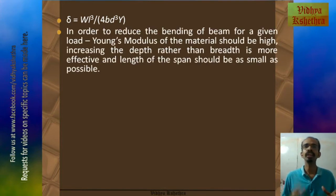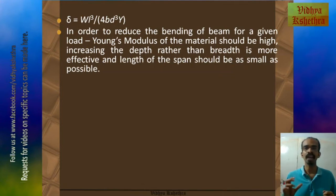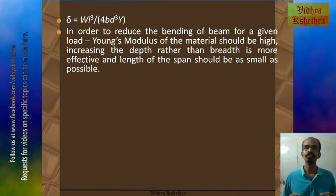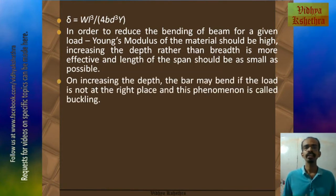In order to reduce the bending of a beam for a given load, the Young's modulus of the material should be high. Increasing the depth rather than the breadth is more effective, since the bending is inversely proportional to the cube of depth, and the length of span should be as small as possible. On increasing the depth, the bar may bend if the load is not at the right place, and this phenomenon is called buckling.